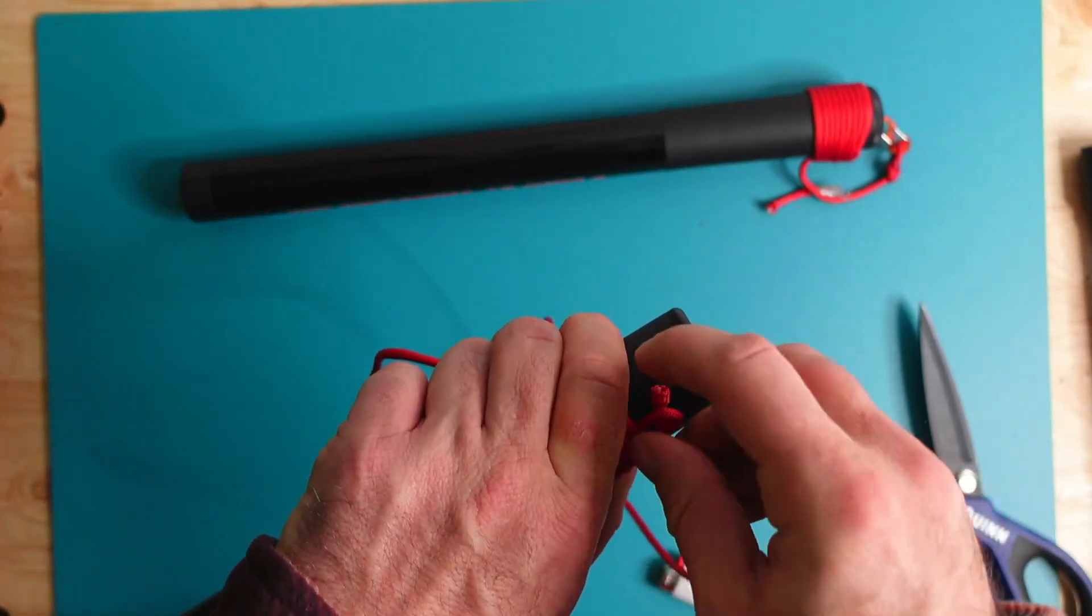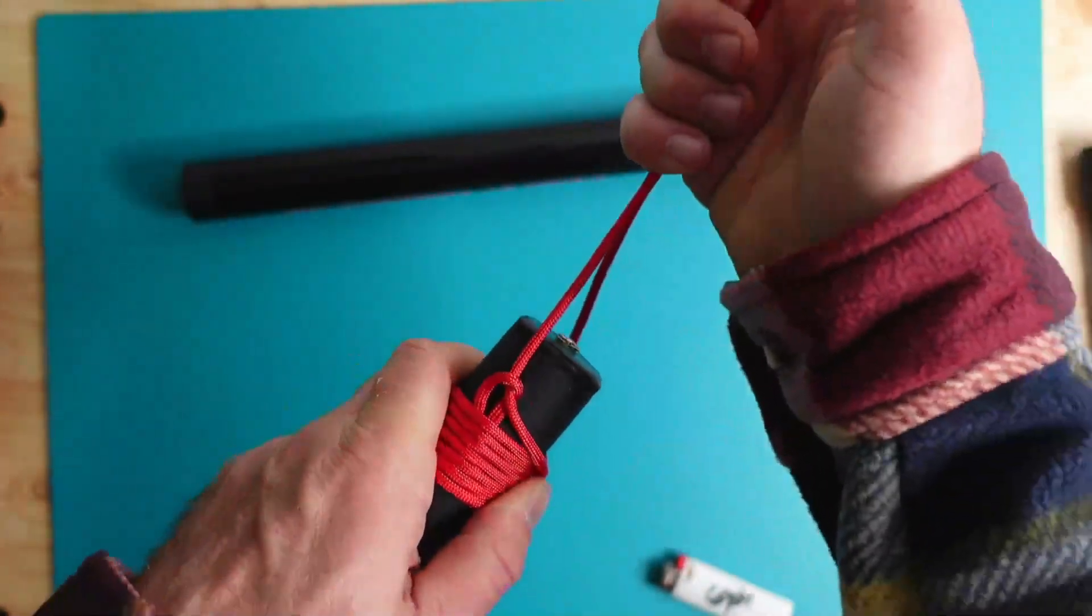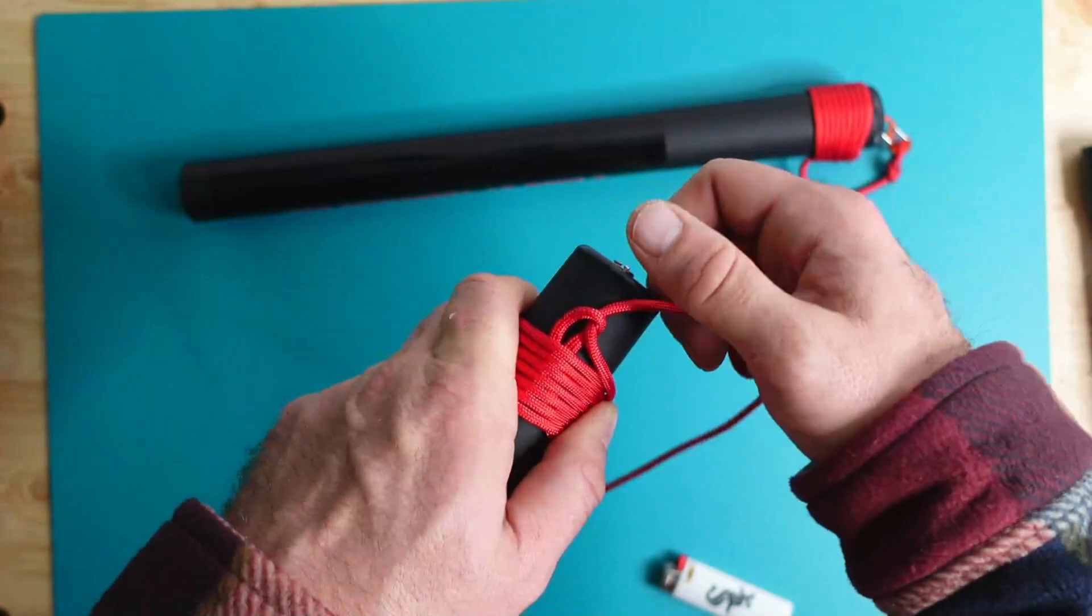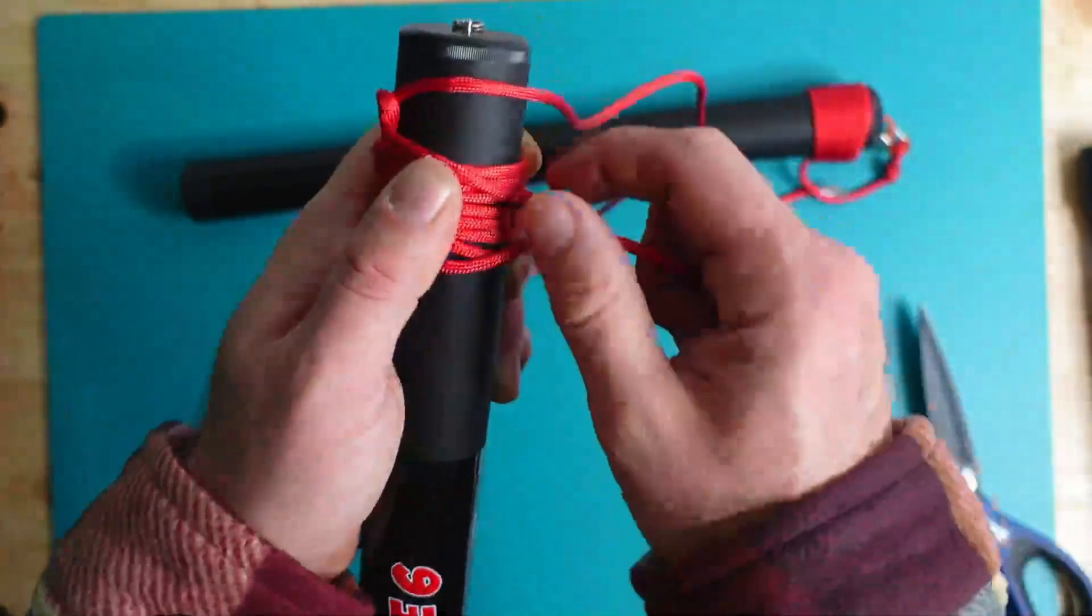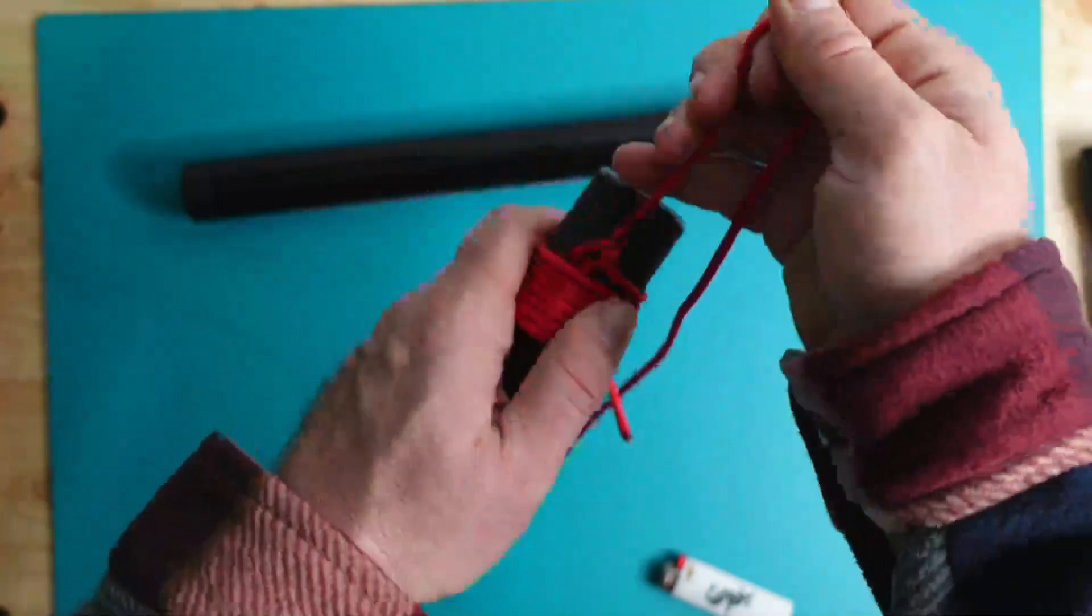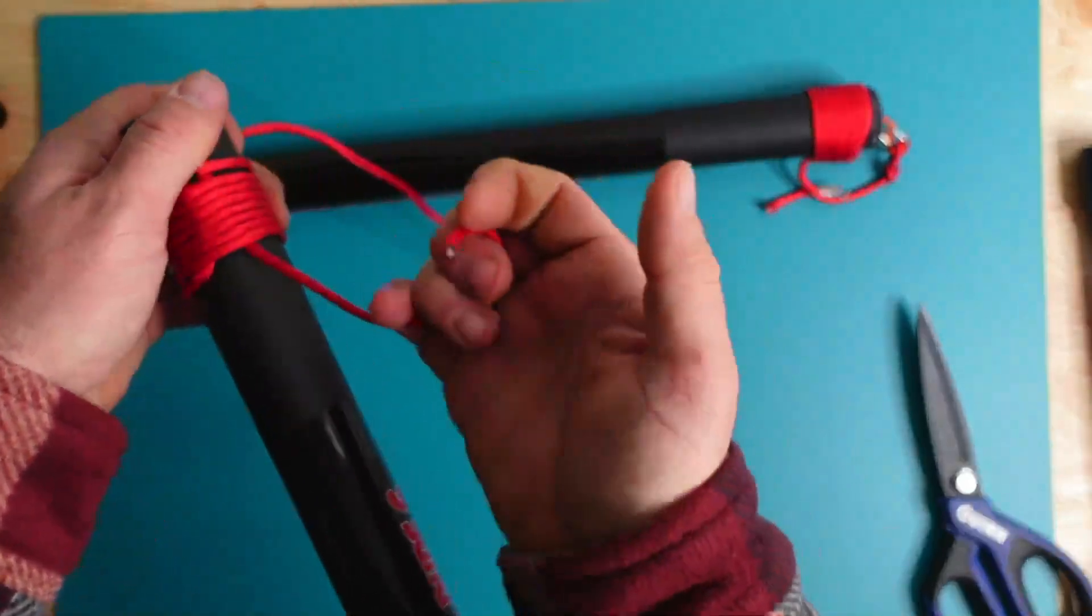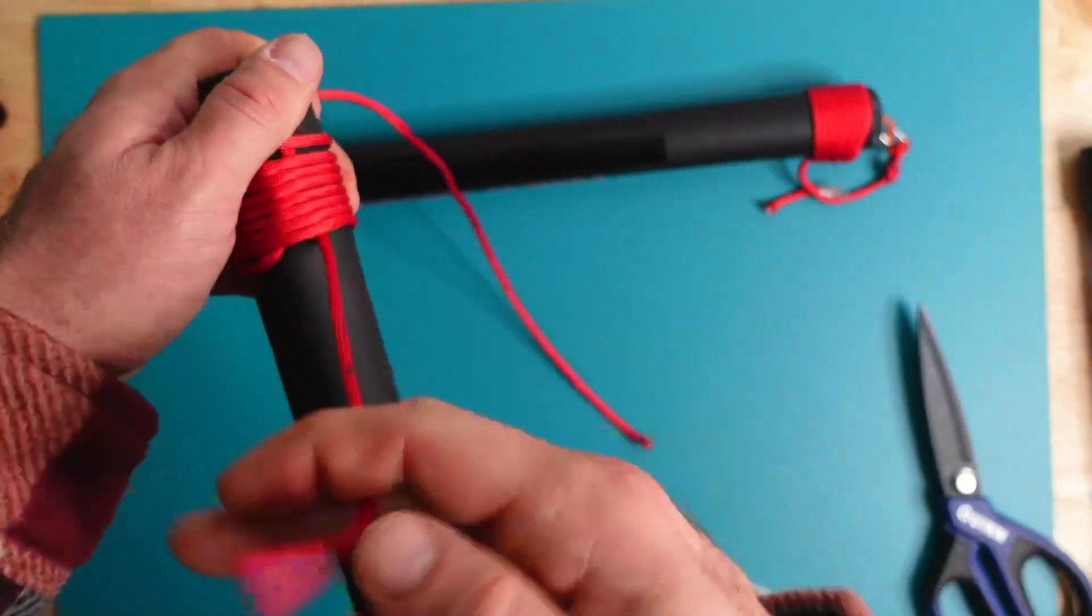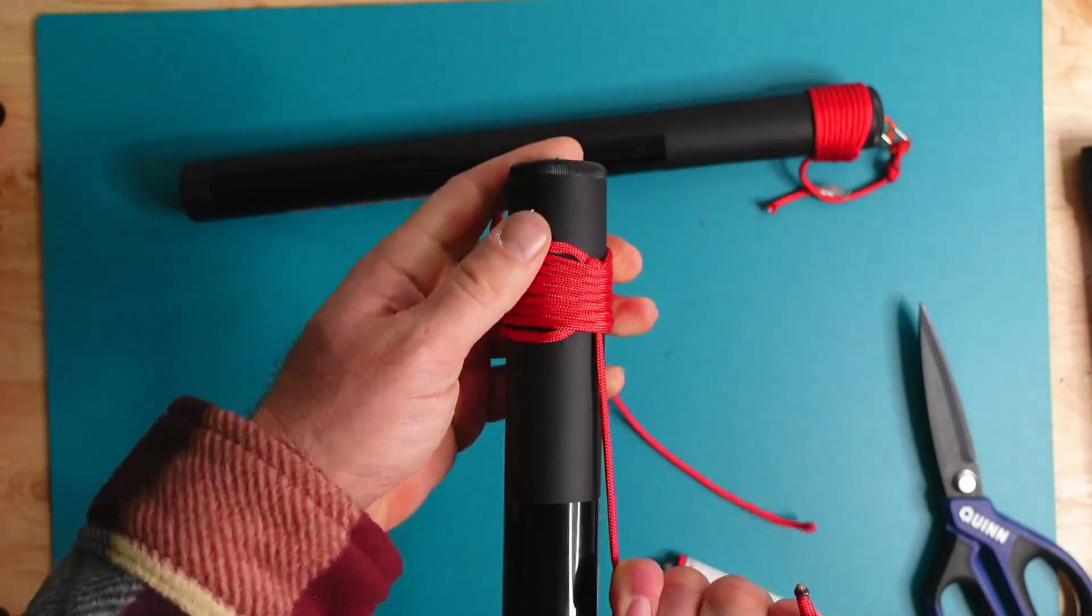And we're getting toward what we might consider the end. There's still a little loop in there, and we need to use that loop to tighten the whipping knot. So we're going to take that open end, the working end, and we're going to put it through the loop. Now this could get tricky.